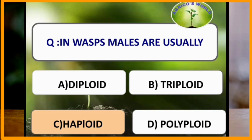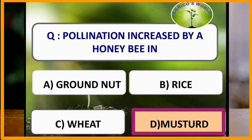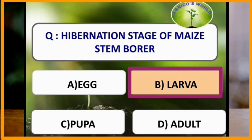Pollination is increased by honey bees in mustard. The hibernation stage of Maize stem borer is larvae — it hibernates in the larval stage.